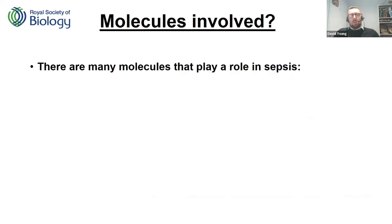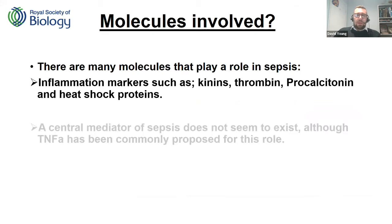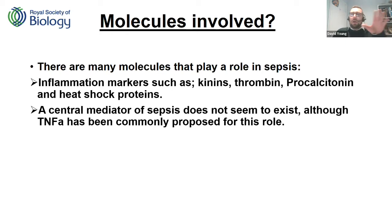Let's look at some of the molecules at play and those being researched at Northampton Hospital. A whole bunch of different markers are used across the UK — procalcitonin is a big one, heat shock proteins, and others depending on location. Different hospitals and clinicians see different things. There is no central mediator: a big rise in a particular molecule doesn't necessarily mean you've developed sepsis. Tumour necrosis factor alpha is one of the big key players, but it's not the only one.